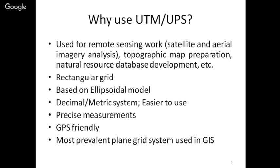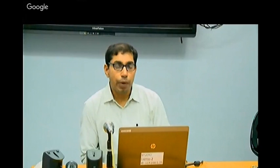The first question is: when we already have a system of latitudes and longitudes, why use UTM and UPS? There are many reasons. Firstly, all remote sensing work — satellite and aerial imagery, topographic map preparation, natural resource databases — and the North Atlantic Treaty Organization (NATO) have agreed that member countries will use UTM and UPS as a grid system. The US federal government is also using UTM and UPS. Additionally, per the Warsaw Pact, those countries also agreed to use UTM and UPS.